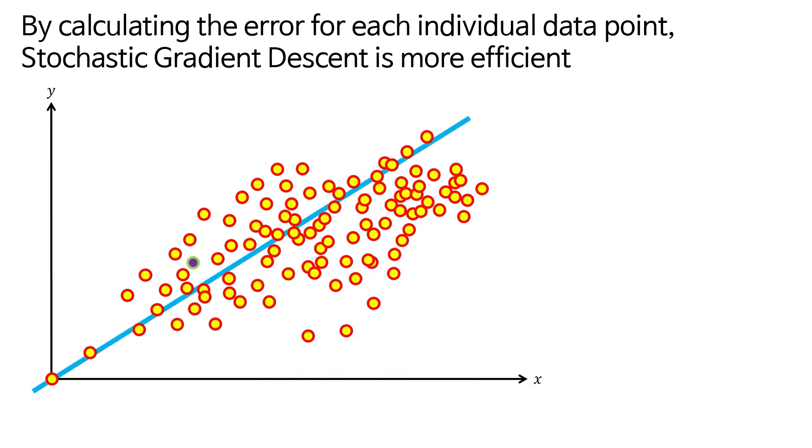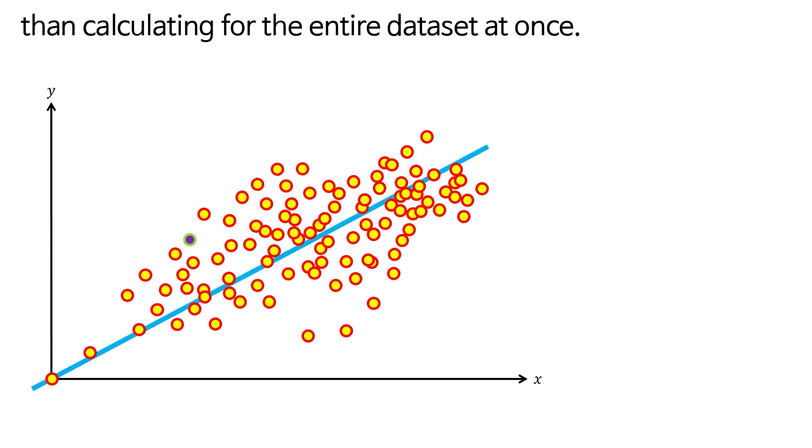By calculating the error for each individual data point, stochastic gradient descent is more efficient than calculating for the entire data set at once.